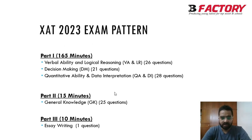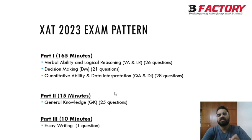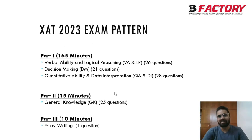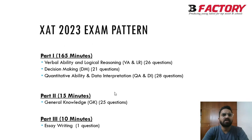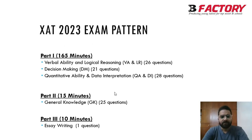Verbal Ability is similar to what we know from CAT — RC, verbal reasoning, and those types of questions. Logical Reasoning in XAT is different from CAT's LR; it's more like what we see in CMAT and other exams — assumption-based questions, statement and conclusion, cause and effect, those types. Decision Making is an altogether different section; you are supposed to make decisions based on given circumstances.